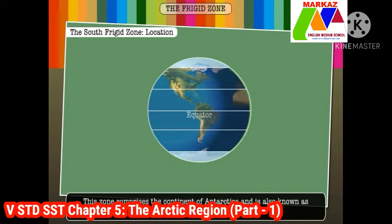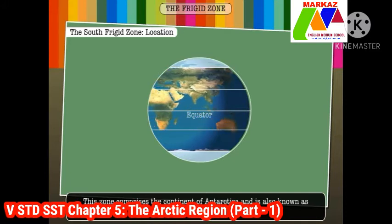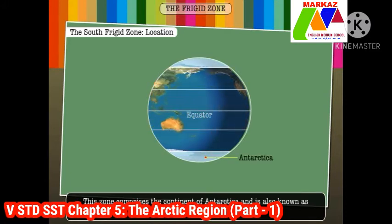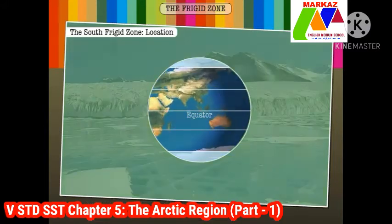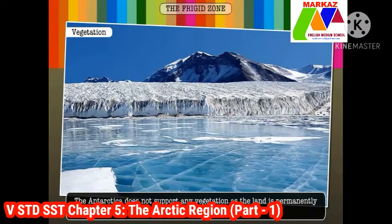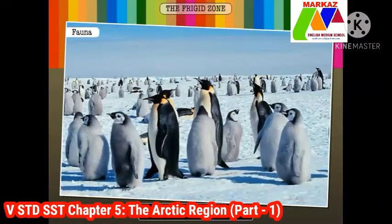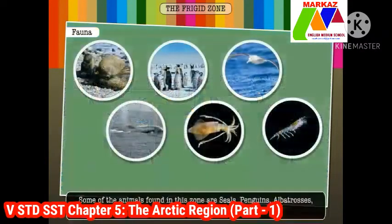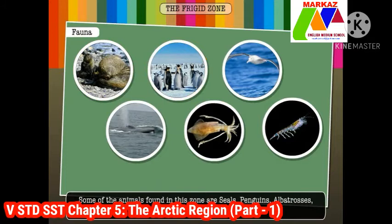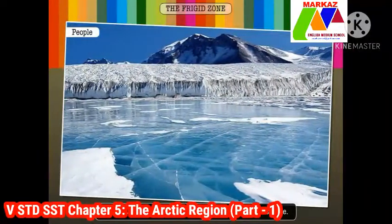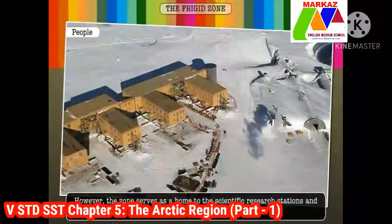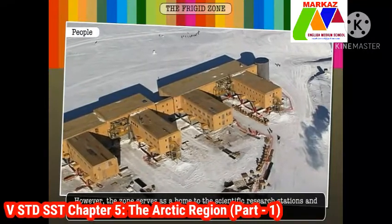The south frigid zone is located between the Antarctic Circle and the south pole in the southern hemisphere. This zone comprises the continent of Antarctica and is also known as the Antarctic zone. Antarctica does not support any vegetation as the land is permanently covered with ice. This zone has only sea animals. Some of the animals found here are seals, penguins, albatrosses, whales, squids, and the Antarctic krill.